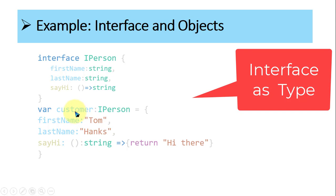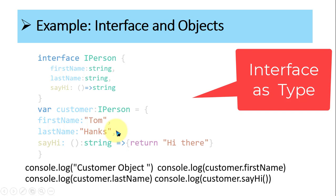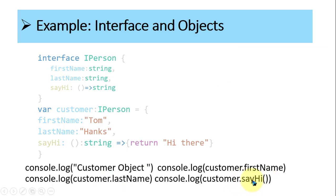Using this object you can iterate the values like 'tom' and 'hanks' etc. To get a value from customer: console.log customer.firstName will print the first name, customer.lastName will print the last name, and calling the method sayHi returns 'hi there'. Using the customer variable you can iterate values from the interface object.